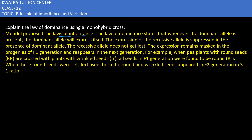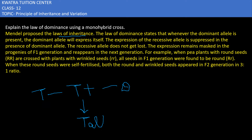For example, suppose there is a genotype capital T and small t, where capital T encodes for tallness and small t encodes for dwarfness. In this case, the phenotype of the plant will be tall because capital T will mask and suppress the small t and express itself. So the phenotype will be tall. This is the law of dominance.